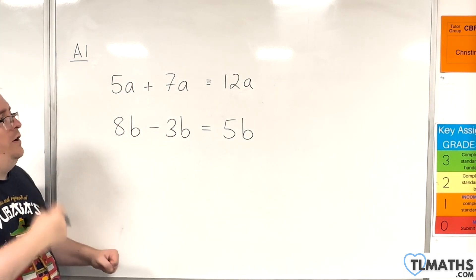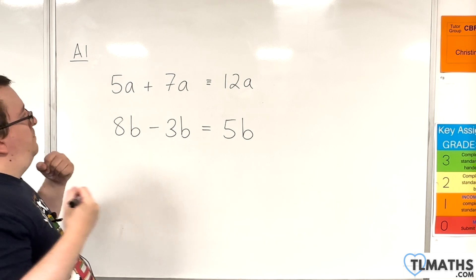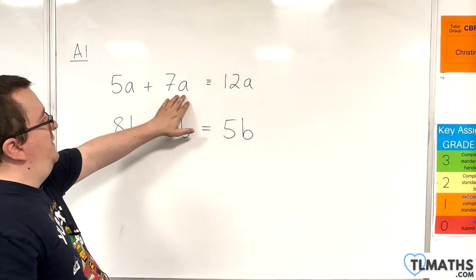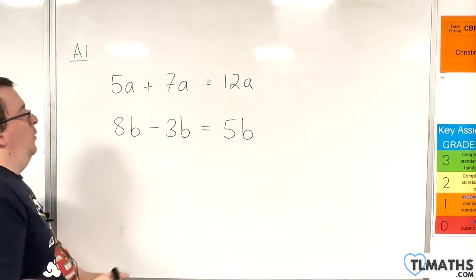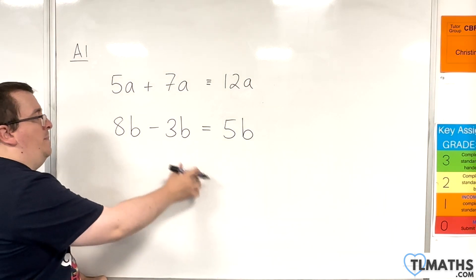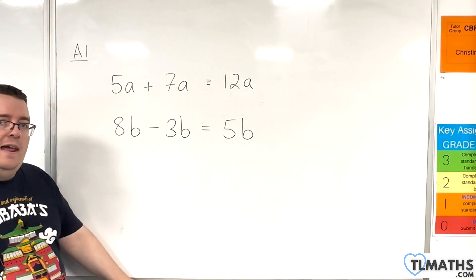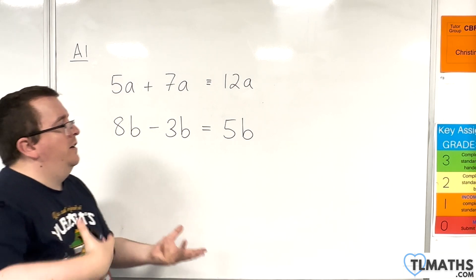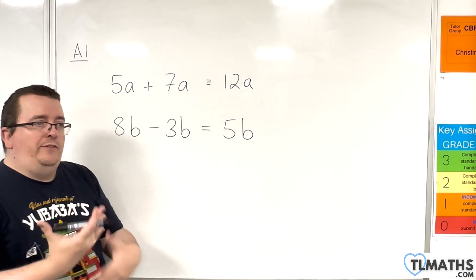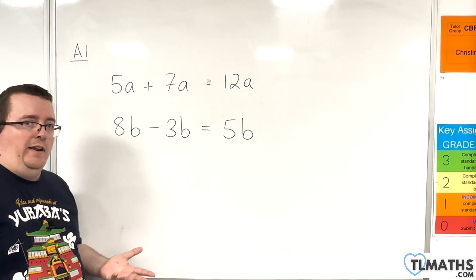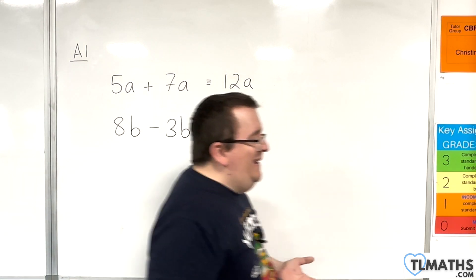Okay, so you're kind of starting to think of it as maybe 5 apples plus 7 apples is 12 apples, or 8 bananas, and then I take 3 bananas away, and I've got 5 bananas left. You can start to kind of think of those letters to mean things like that, but you've got to be a little bit wary...